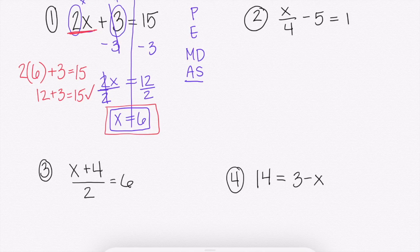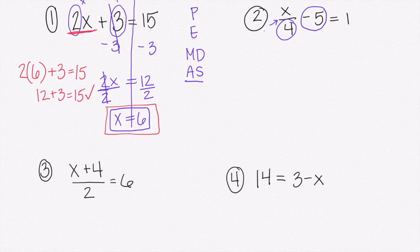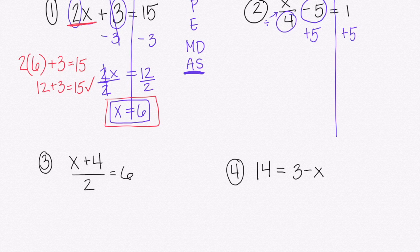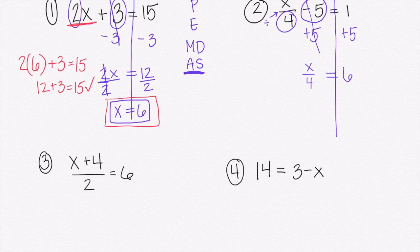Moving on to number 2. Look at what numbers are with your x that you want to get rid of — we have 4 and a negative 5 or minus 5. We have this fraction bar here, which means the same thing as divide, and then we have minus 5. So our 4 is dividing with our x and our 5 is subtracting from our x. We're going to start with add and subtract: to get rid of negative 5 or minus 5, we add 5. If we do that to the left side, we have to do it to the right side.